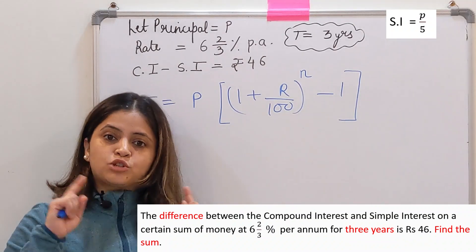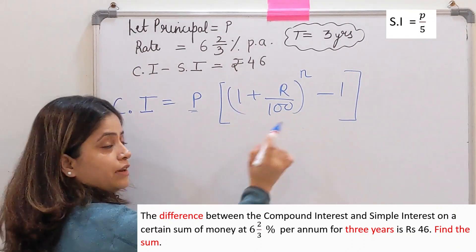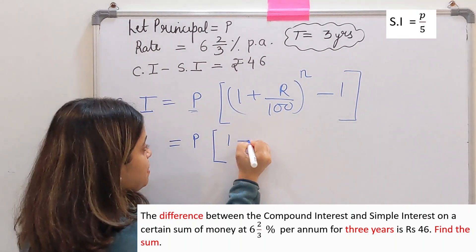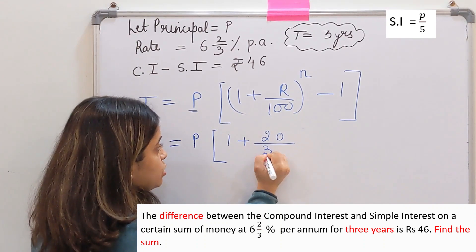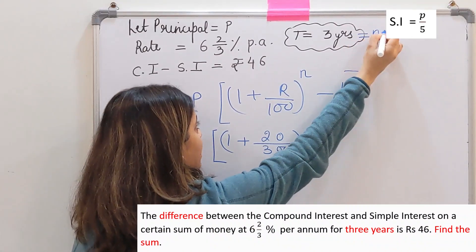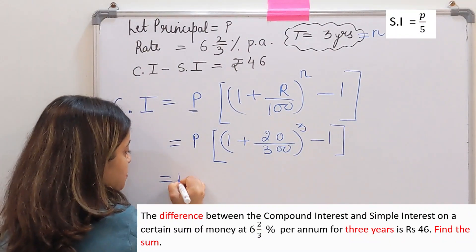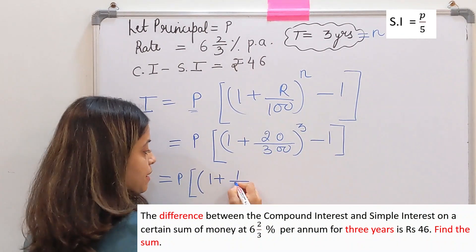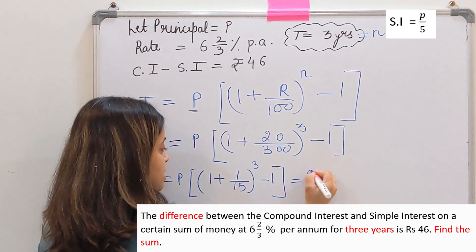Next step is to find the compound interest. The formula for compound interest is P[(1 + R/100)^n - 1]. P is unknown, we keep it as it is. 1 plus R/100, where R is 20/3, so we get 1 + 20/300. After simplification, we get P[(1 + 1/15)^3 - 1], which is P[(16/15)^3 - 1].